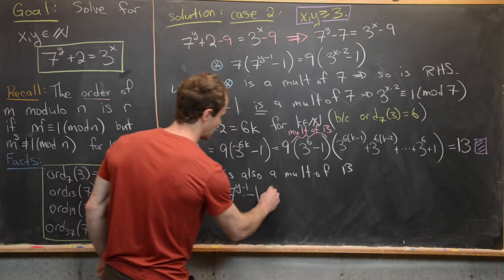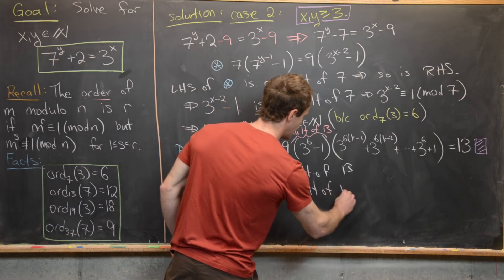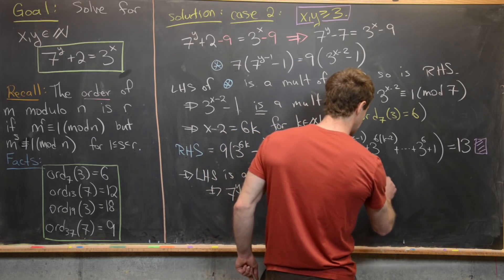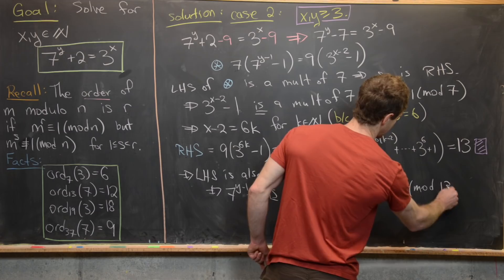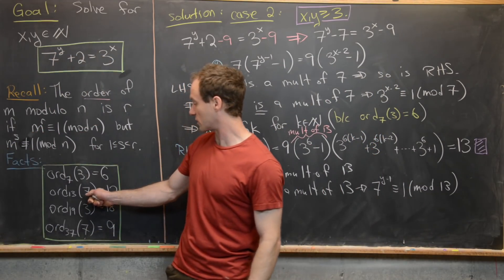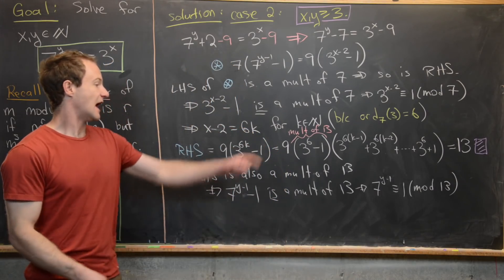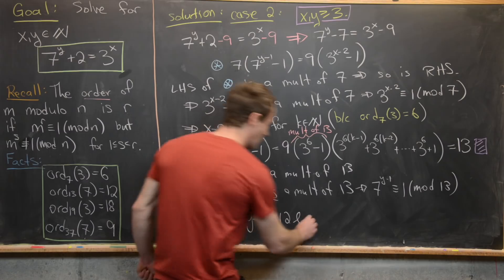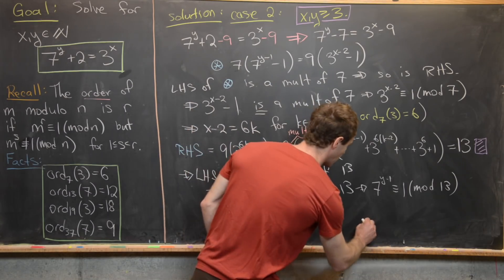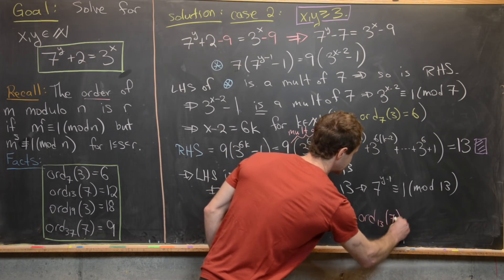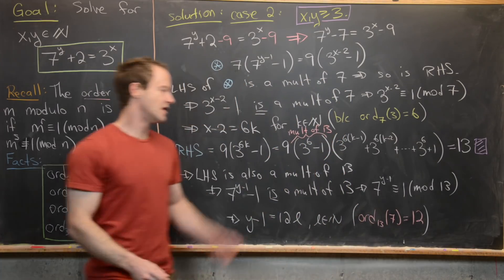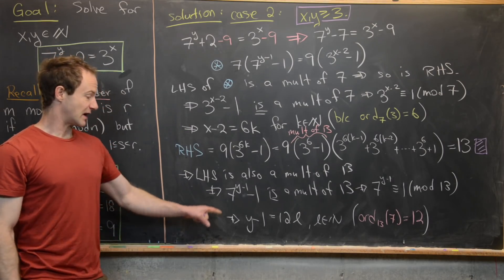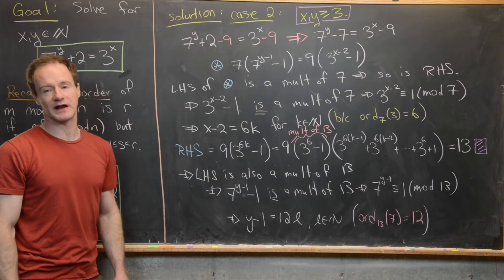Rewriting as a congruence: 7^(y−1) is congruent to 1 mod 13. Using the fact that the order of 7 mod 13 is 12, the exponent y − 1 must be a multiple of 12. So we write y − 1 = 12l for some natural number l.